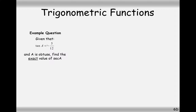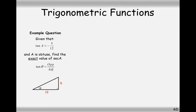In this case we've got tan A equal to minus 5 over 12. Don't worry too much about the negative symbol for now - we're going to mostly look at the 5 over 12 value. We're given that the angle A is obtuse. Let's go back to basic right angle trigonometry and draw a right angle triangle. The ratio is formed by the opposite side divided by the adjacent side, so we have 5 on the opposite and 12 on the adjacent. Using Pythagoras' theorem we get 13 on the hypotenuse.